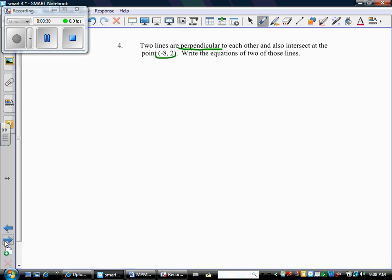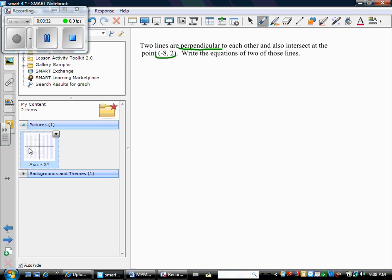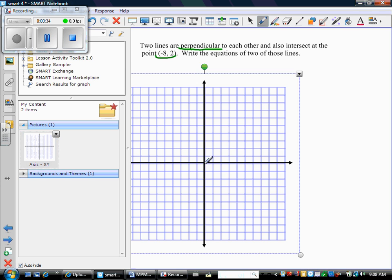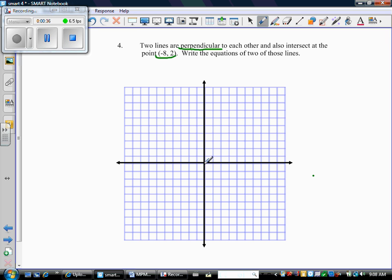So let's get a feel for what this question is doing by making a little graph. The graph has to be properly labelled so that I can think about it properly. So I have a point here at (-8, 2). And what I know is that two lines pass through this point and are also perpendicular. So let's just think about lines passing through this point.